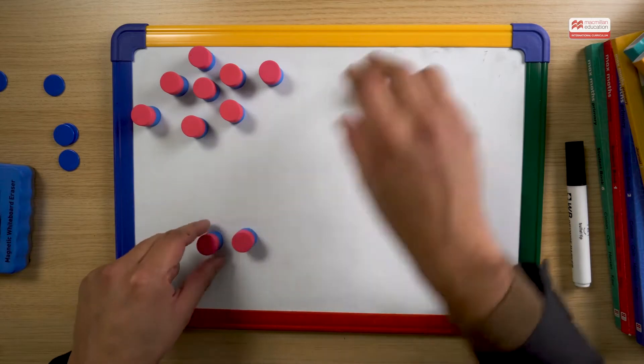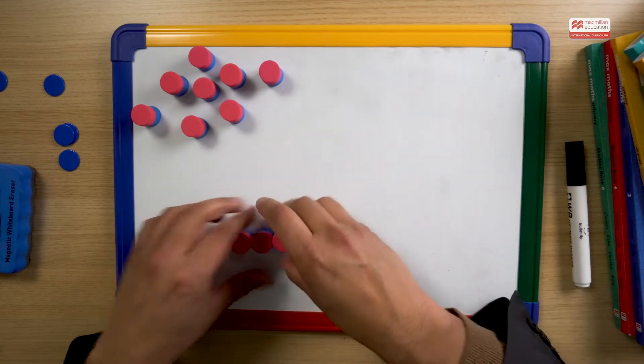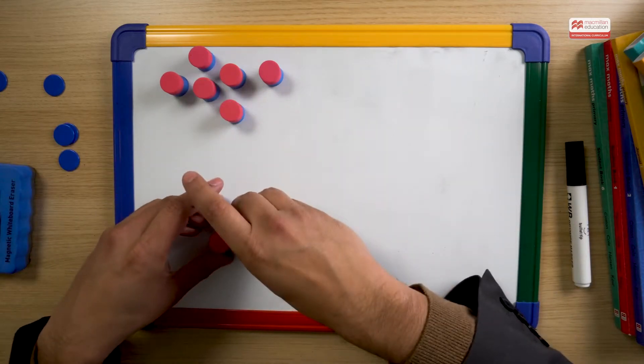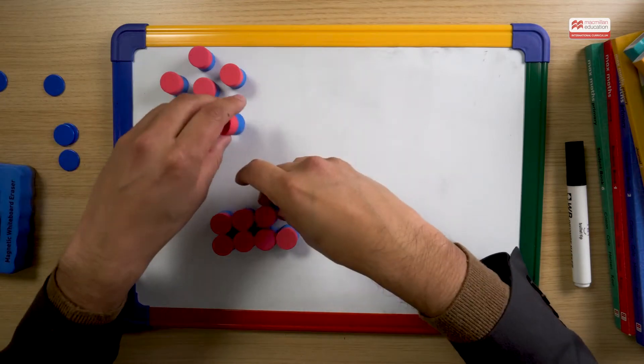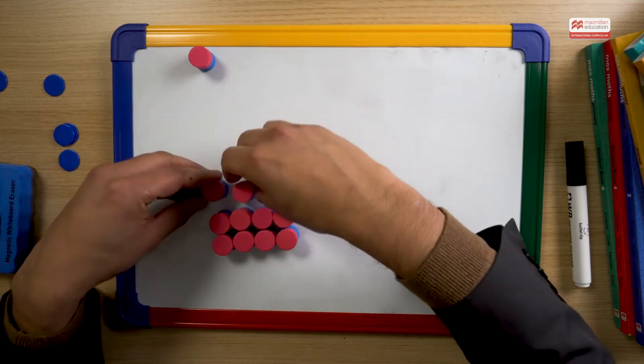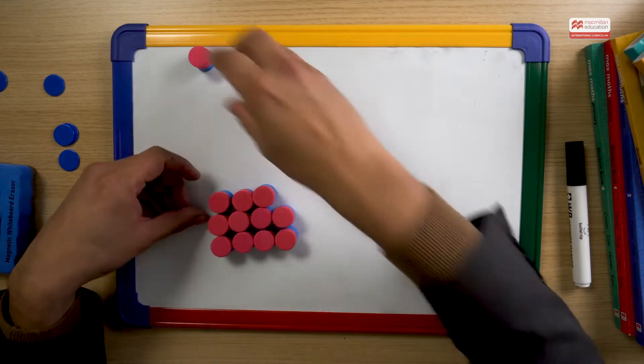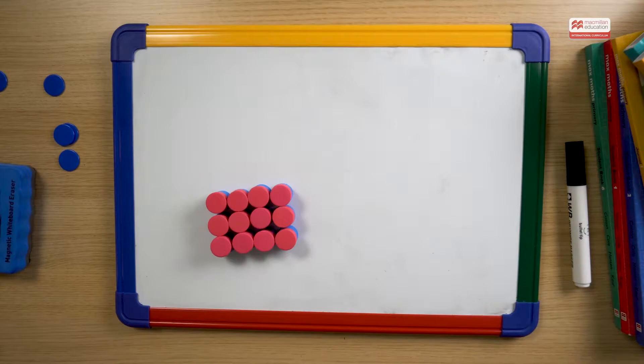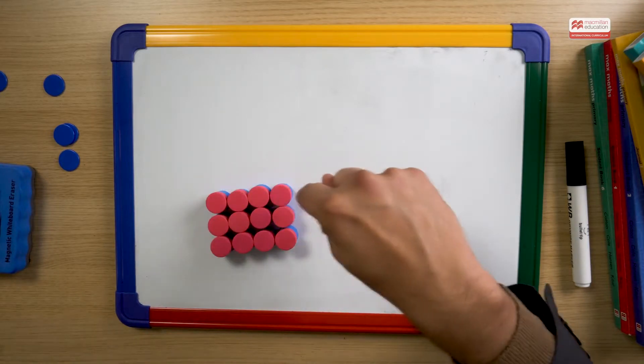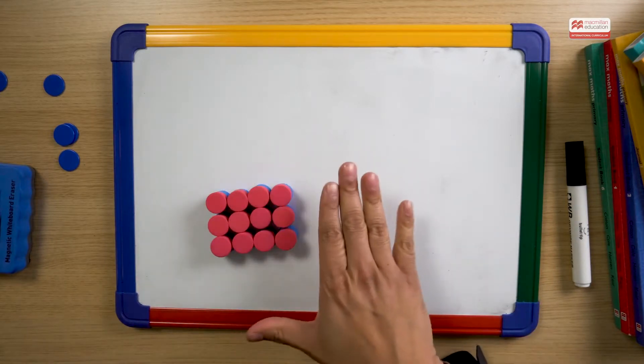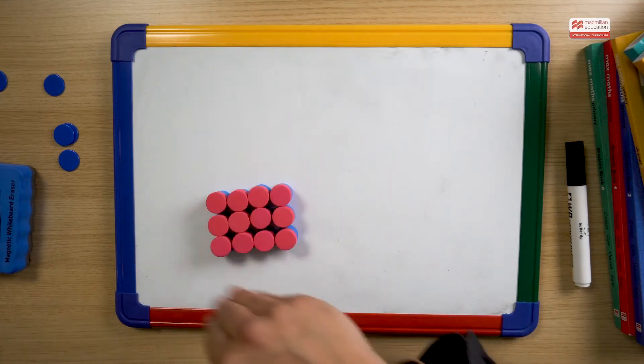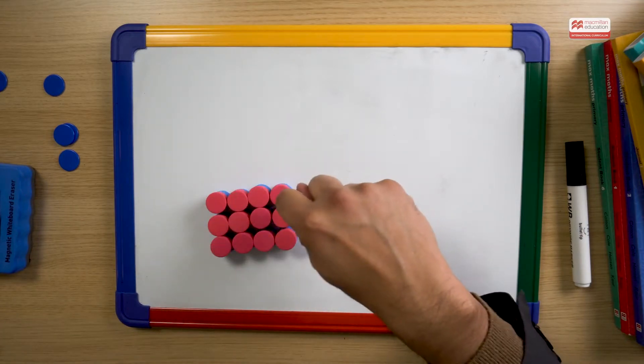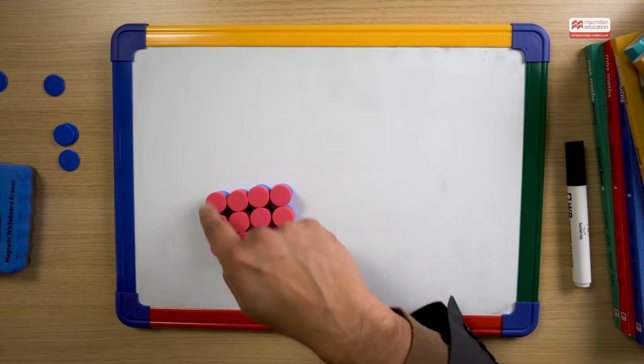So children might start off with something like this, making rectangles like I've done here by using all of the 12. So I can see that a rectangle like so. This is one rectangle and we can see that all together we have 12 and we have 4 going across and 3 going down. And we can say a factor of 12 is 4 and another factor of 12 is 3.